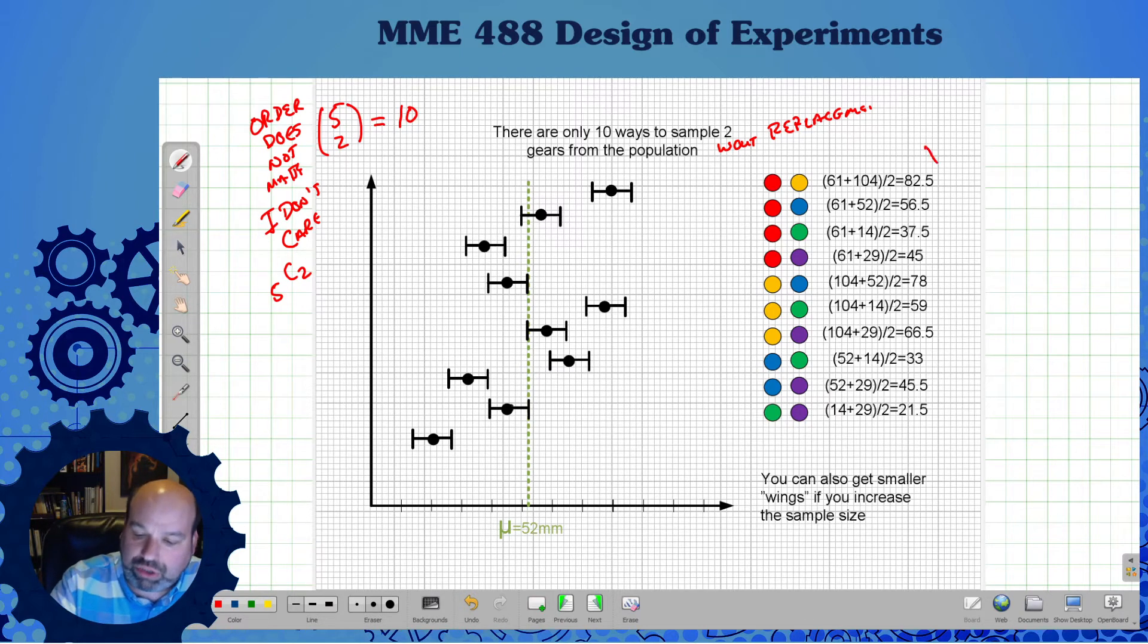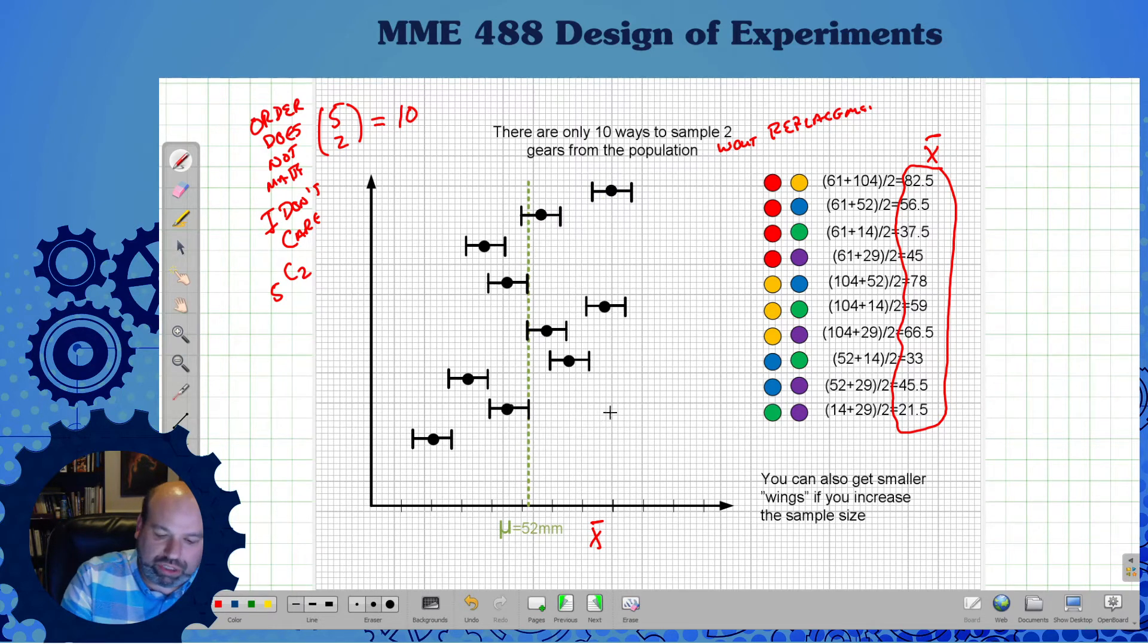I could take the averages. I'm calculating little x-bars. That's what this is all about. Then I'm plotting those x-bars. Now notice I have more of them. As I increase, I get smaller wings if I increase the sample size. I still have 10 of these. These are still 60% confidence intervals. But I have many more samples. I've got a sample size, little n of two, which gives me a whole lot more possibilities. 10 possibilities.